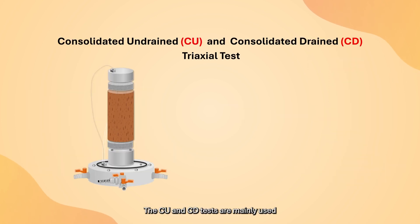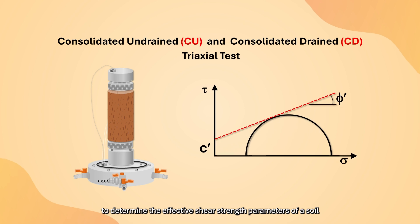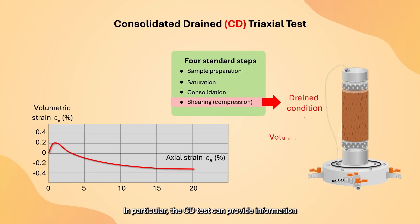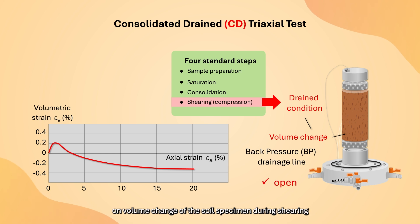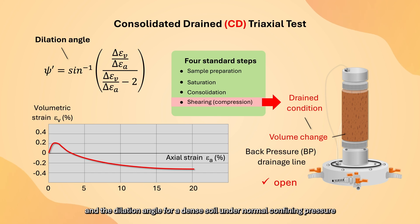The CU and CD test are mainly used to determine the effective shear strength parameters of a soil. In particular, the CD test can provide information on volume change of the soil specimen during shearing and the dilation angle for a dense soil under normal confining pressure.